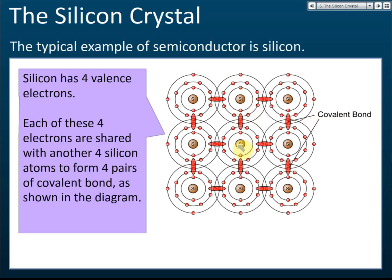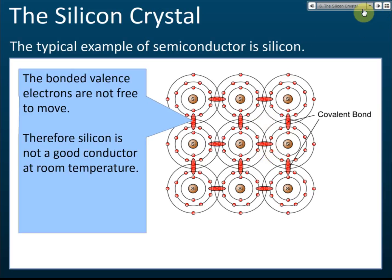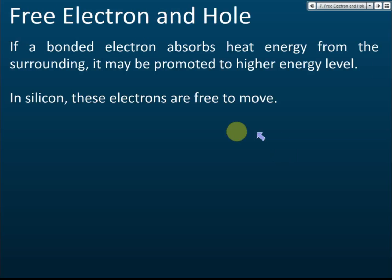Each silicon atom forms four covalent bonds with surrounding atoms. It shares four pairs of electrons to form these four covalent bonds. These bonded valence electrons are not free to move, so silicon cannot conduct electricity well at room temperature.